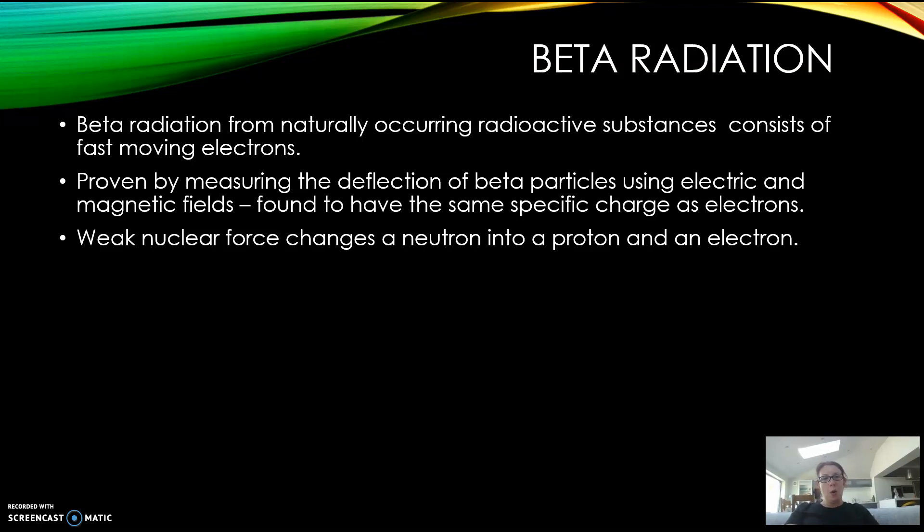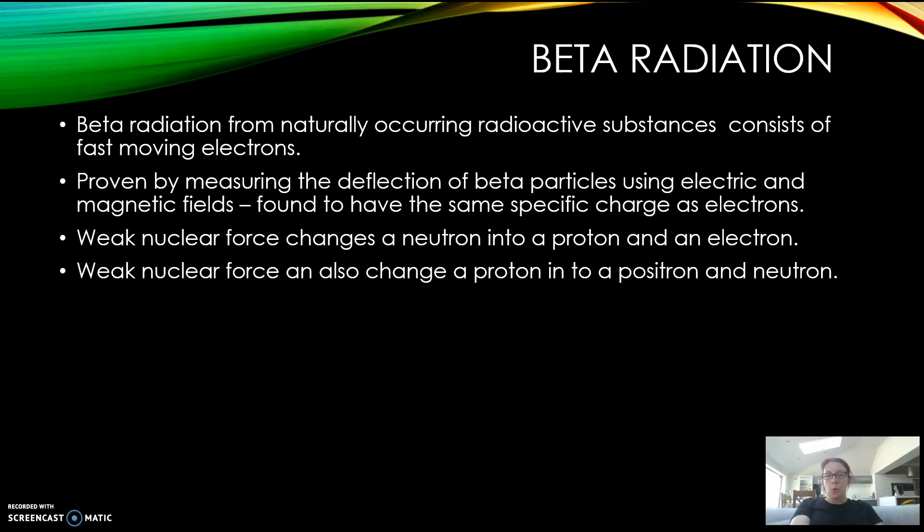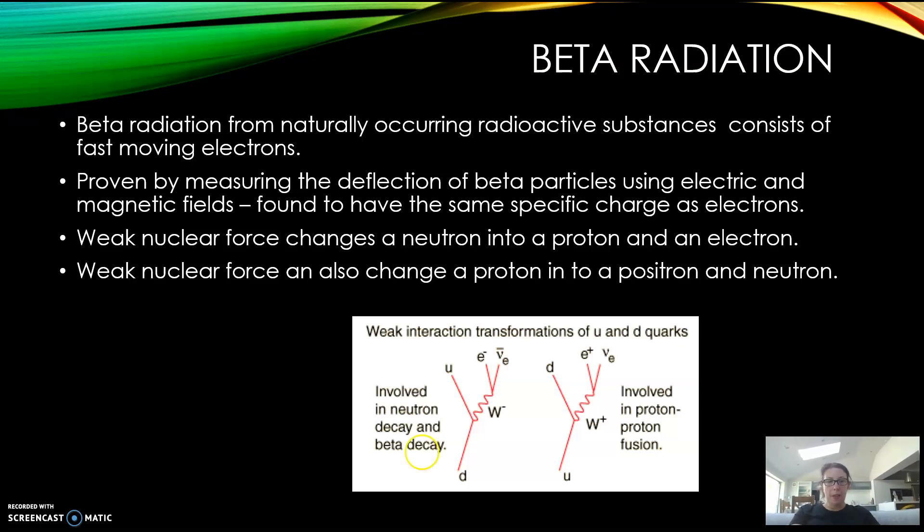What it is, is the weak nuclear force changing a neutron into a proton and an electron, which we've done before. The weak nuclear force can also change a proton into a positron and a neutron, so that's beta plus decay, which we did in the quantum physics topic right at the start of AS.